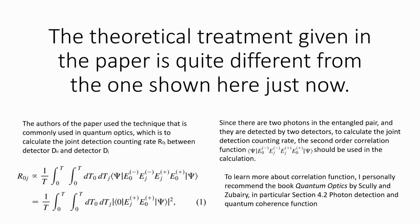The theoretical treatment given in the original paper by Kim et al. is quite different from the one shown here just now. The authors used the technique commonly employed in quantum optics. They calculate the joint detection counting rate between detector D0 and one of the other detectors. Since there are two detectors involved, second-order correlation function is used to calculate the joint detection counting rate.